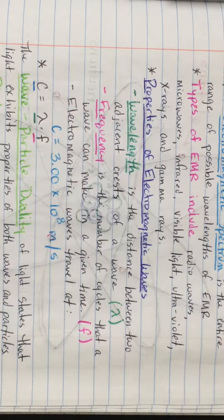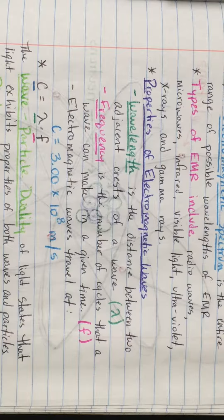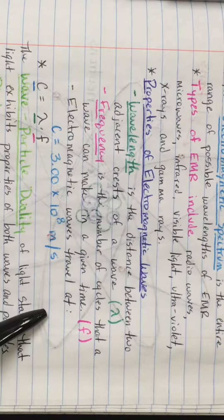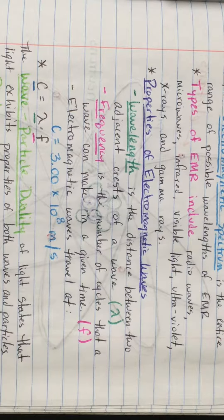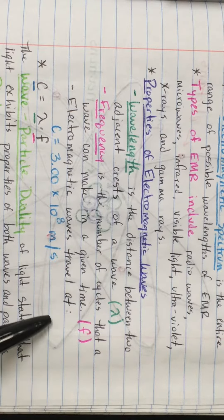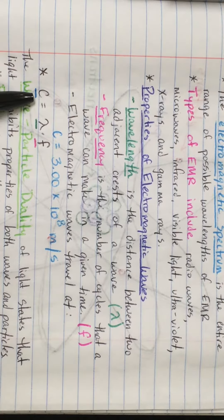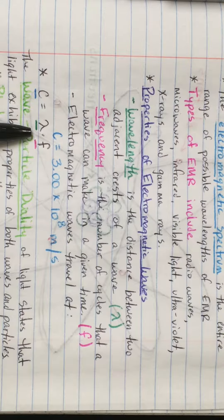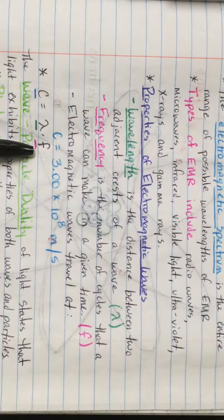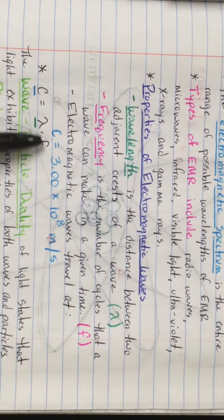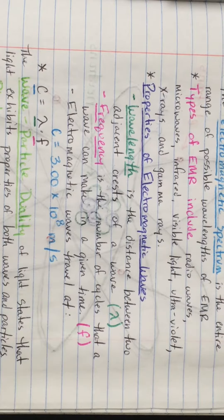Frequency is another property of electromagnetic waves. Frequency is the number of cycles that a wave can make in a given amount of time, and the variable we use for that is f. All electromagnetic waves travel at the same speed — 3.00 times 10 to the eighth meters per second. You might know this as the speed of light, represented by the variable c. The relationship is that c is equal to the wavelength of the wave multiplied by its frequency. Because this is a constant, if we know wavelength or frequency, we can use this equation to determine the other.